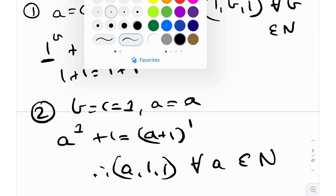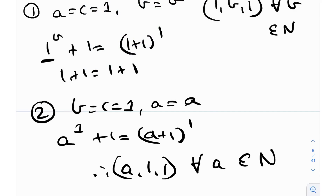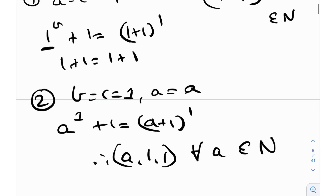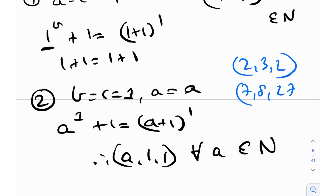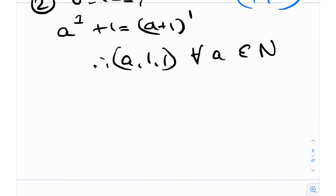But what about the non-trivial solutions? Non-trivial solutions are ones that are a little harder to find — not standard. Like, how do you know whether something like (2,3,2) holds, or maybe (7,8,27)? How do you know these are the only solutions? Well, it turns out the only non-trivial solutions are the ones given by Catlin's conjecture. So let's discuss Catlin's conjecture.